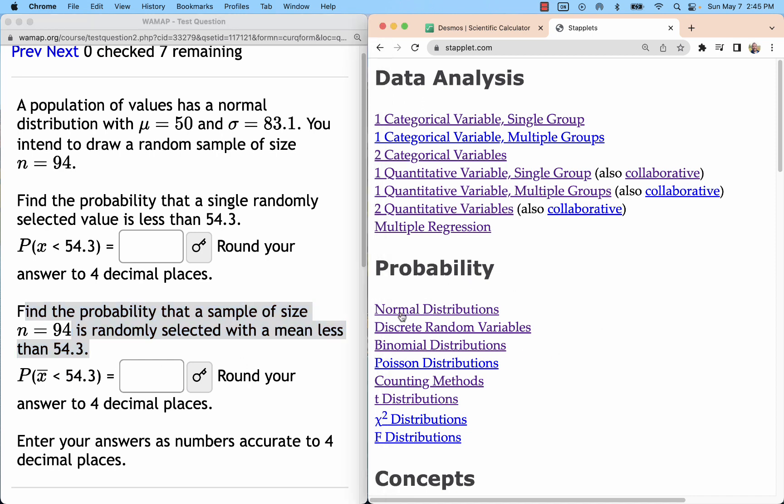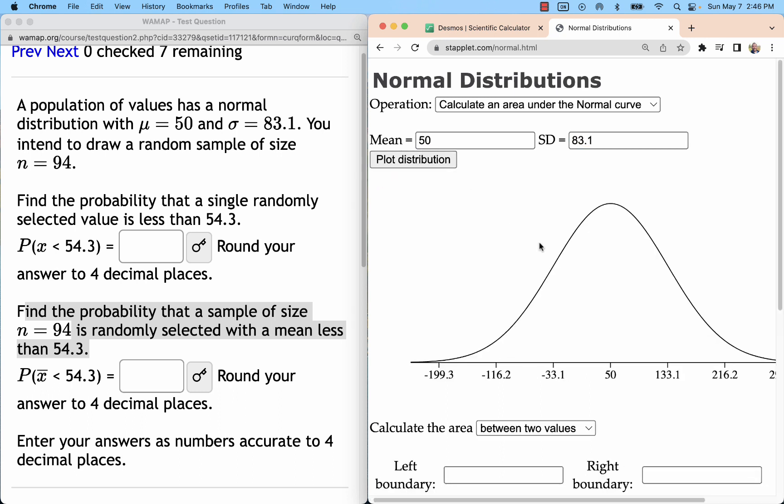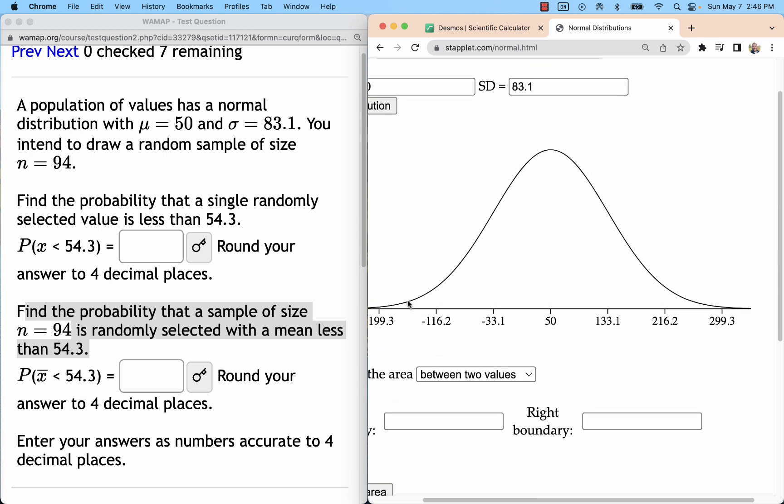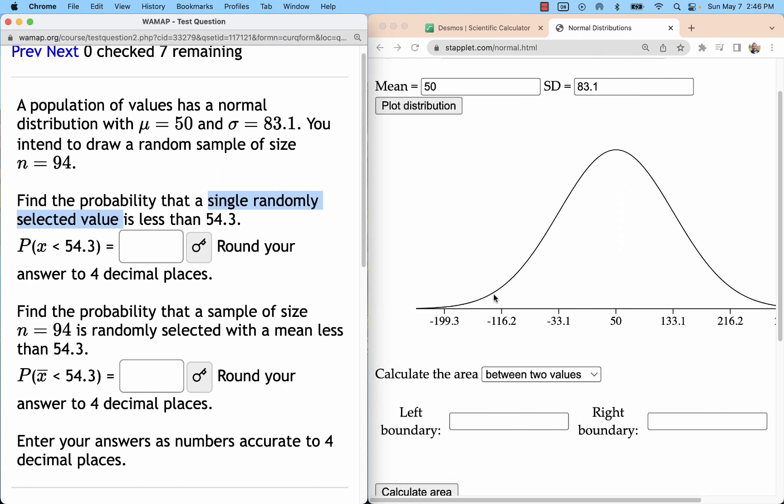Let's start with staplet.com normal distributions and we'll enter our mean and standard deviation as given: 50 and 83.1 for this problem. We can see the graph of the bell curve, and this is going to compare single selected values. We have a wide range of values here.